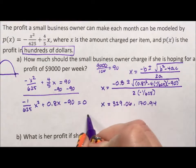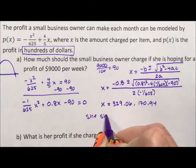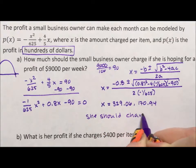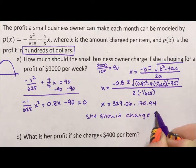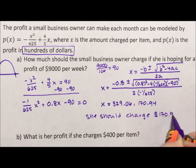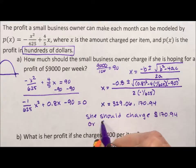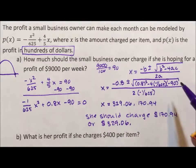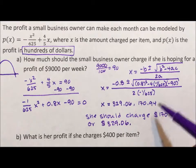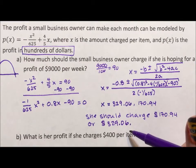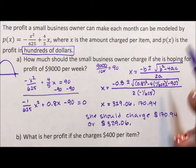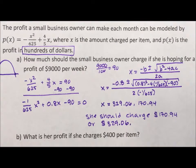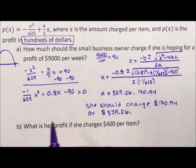So she should charge $170.94 or $329.06. Money is always rounded to two decimal places, so the context tells you exactly how to round. The next part asks: what is her profit if she charges $400 per item? This is a plug-and-chug — just find P of 400.